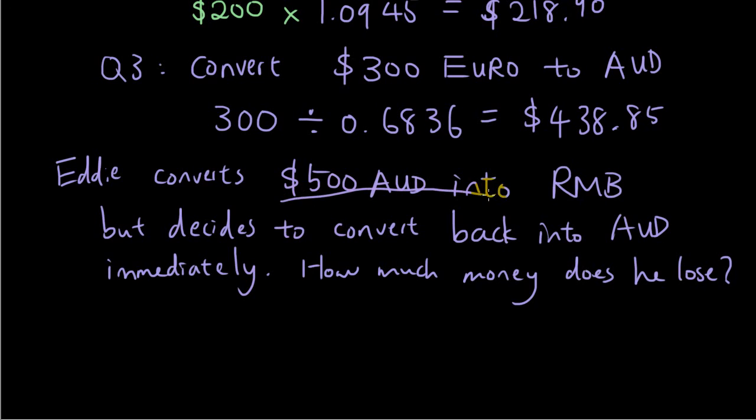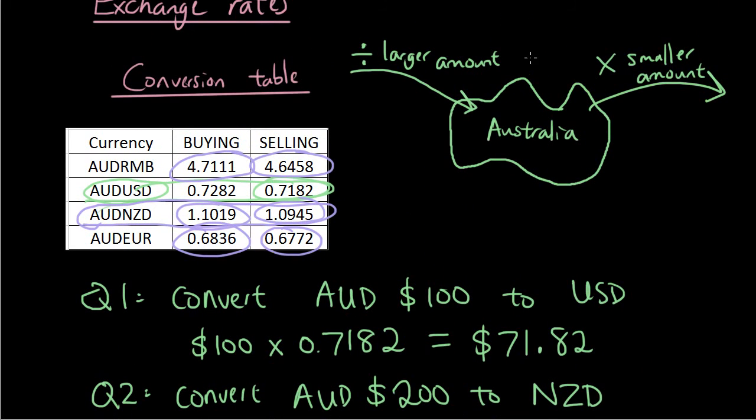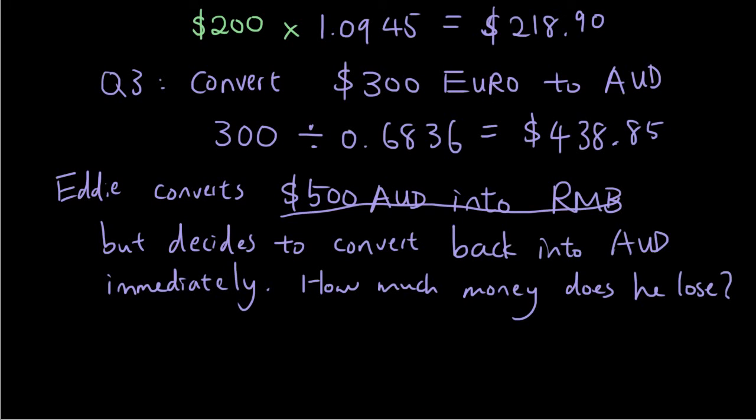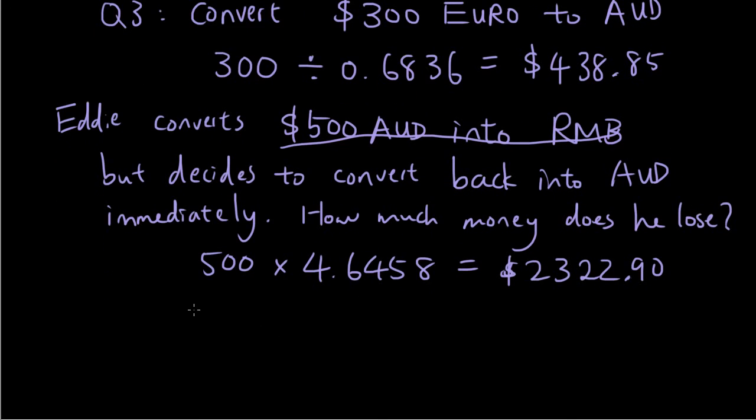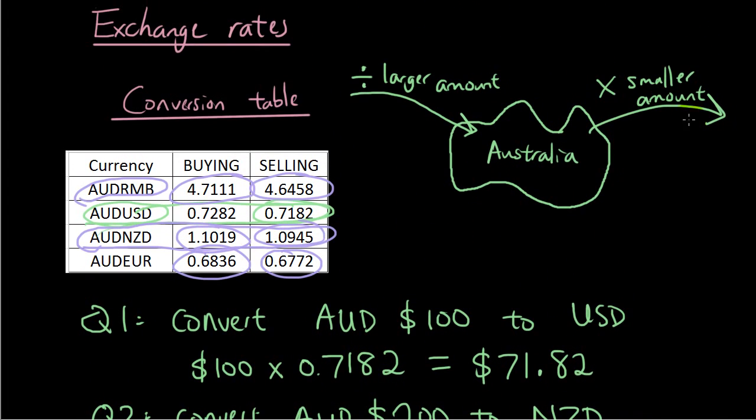So if I'm going from Australian dollar to another currency, according to the diagram, I multiply by the smaller amount. So Australian dollar to another currency RMB, I would multiply by the smaller amount, which is 4.6458. So I got 500 times 4.6458. And that gives me $2,322.90. Now, I decided to convert back straight away because I'm an idiot. I'm going to convert it divided by the larger amount, which is 4.7111.